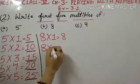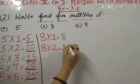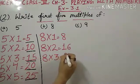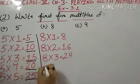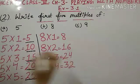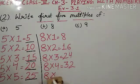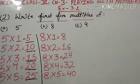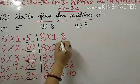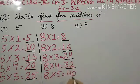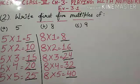Then 8 multiplied by 2, 8 twos are 16. 8 multiplied by 3, 24. 8 multiplied by 4, 32. 8 multiplied by 5, 40. So, these are the first 5 multiples of 8: 8, 16, 24, 32 and 40.